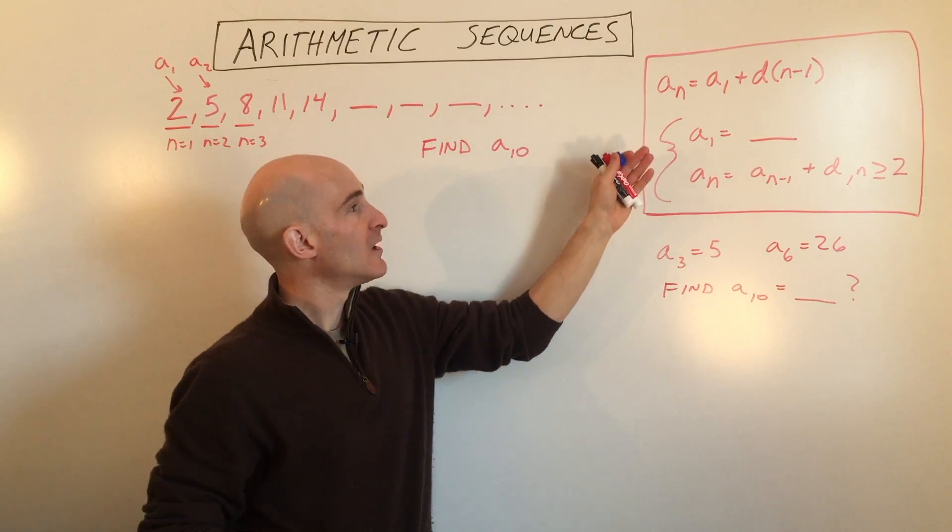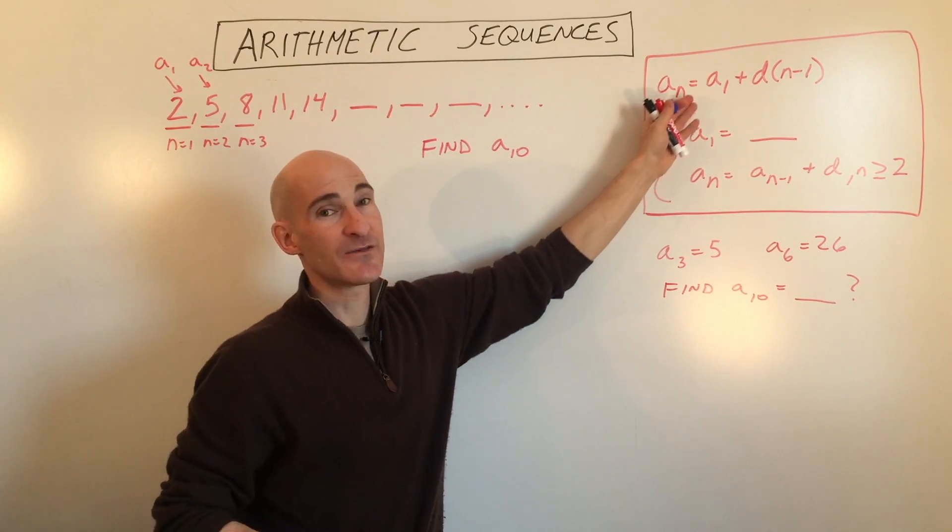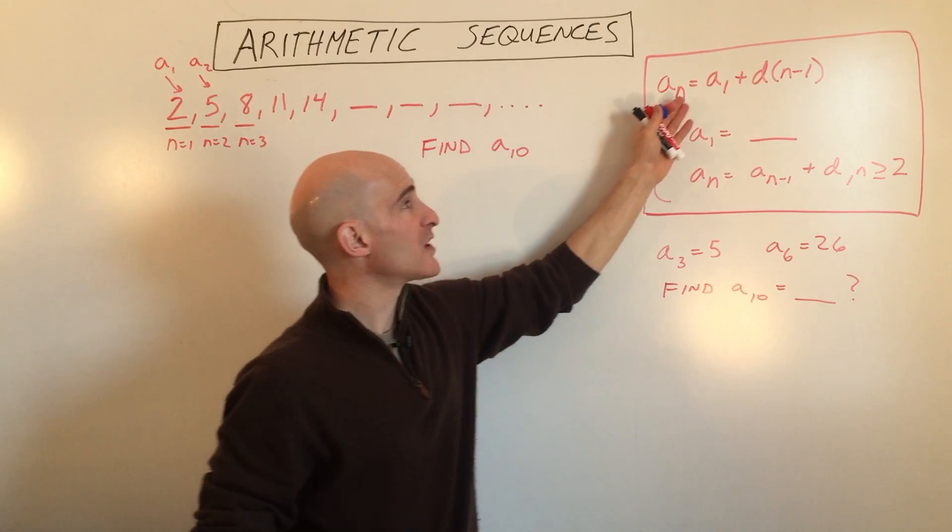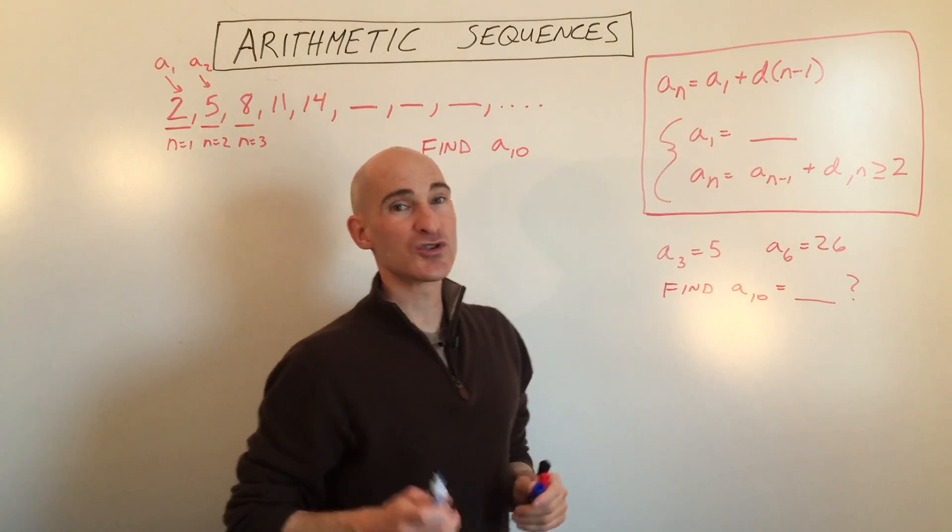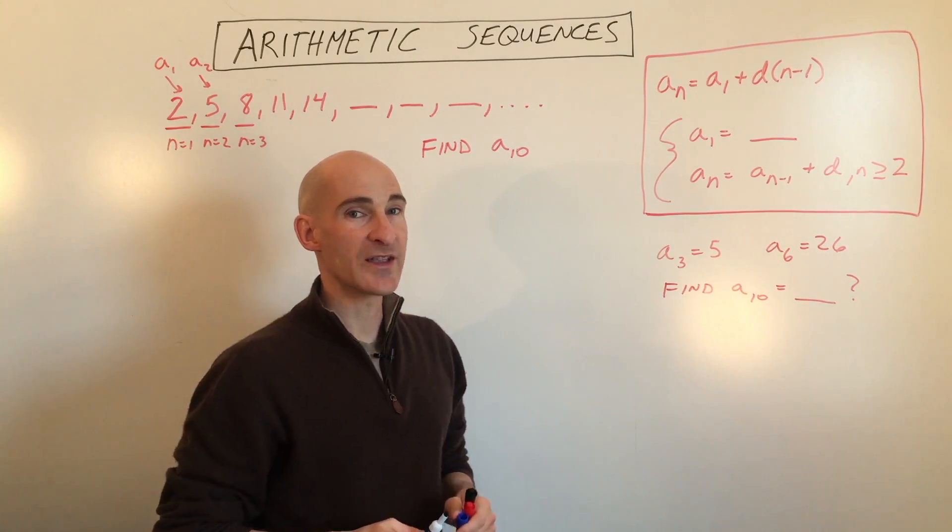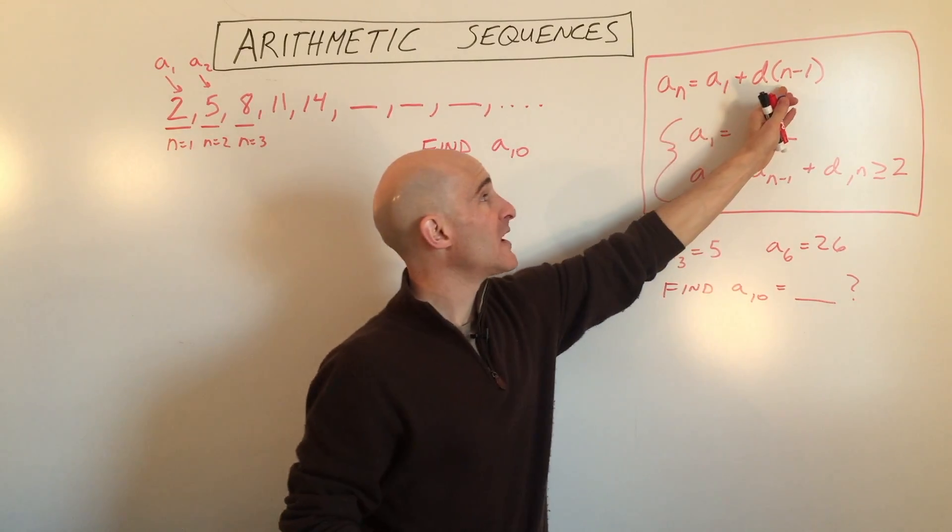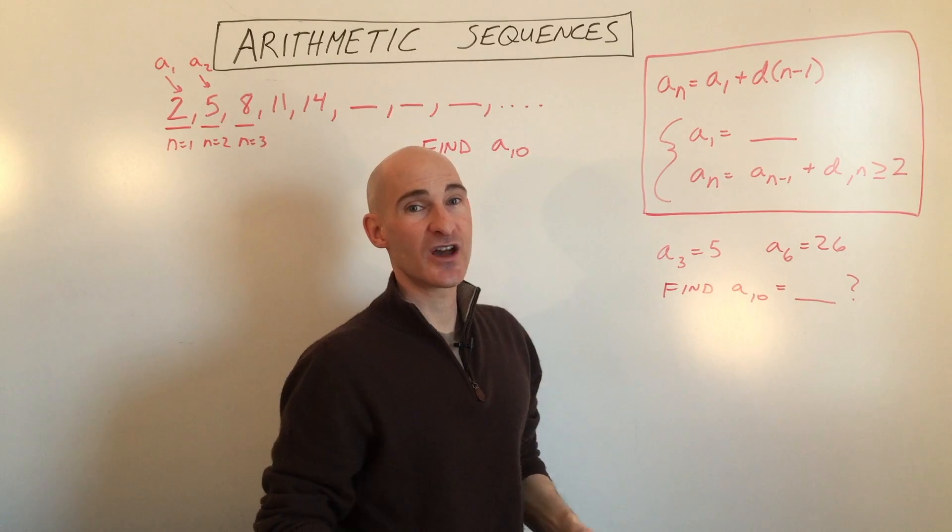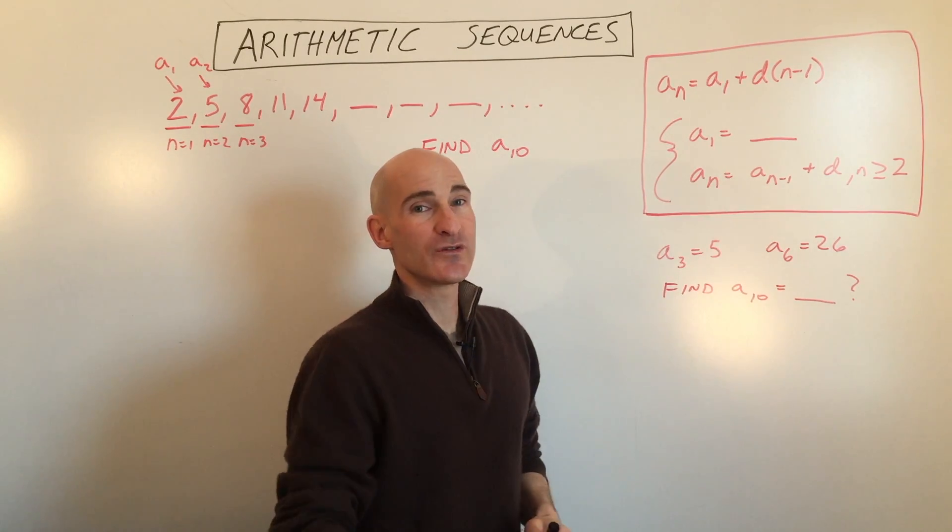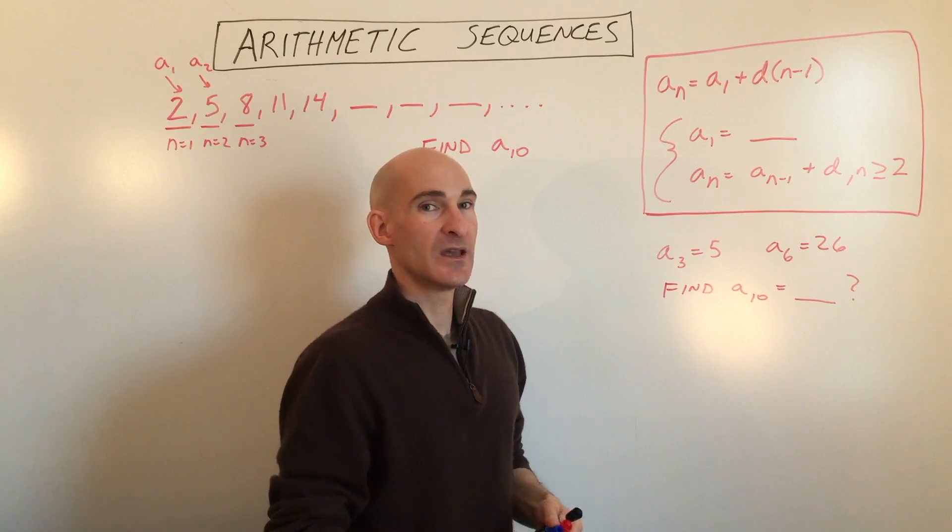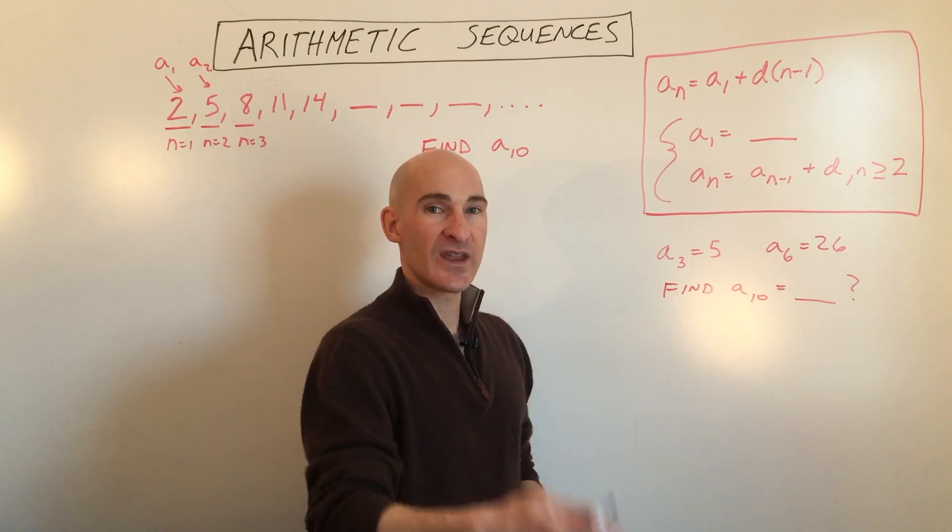Now when we go to find a specific term in the sequence, we can write two different types of formulas. One is an explicit formula, which will take you right to that term that you want. So if you want the 100th term, you put in n equals 100, it'll take you right to the 100th term. And then there's another type of formula, it's called a recursive formula, where you have to keep repeating to get to the next term.